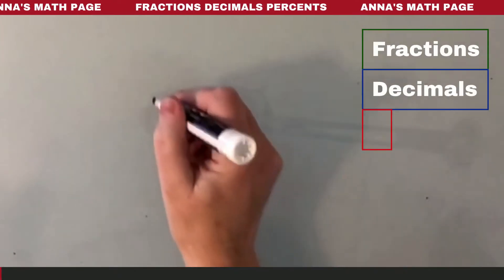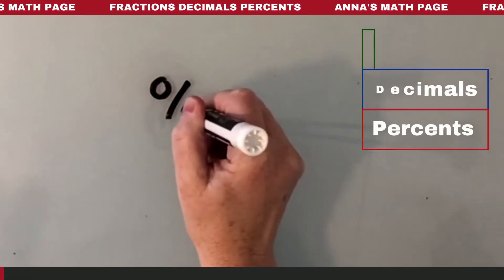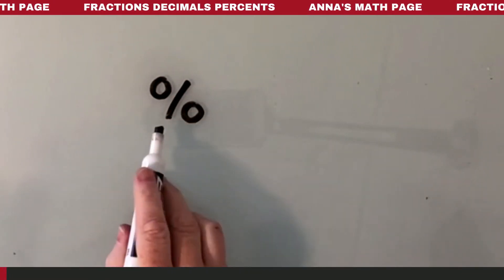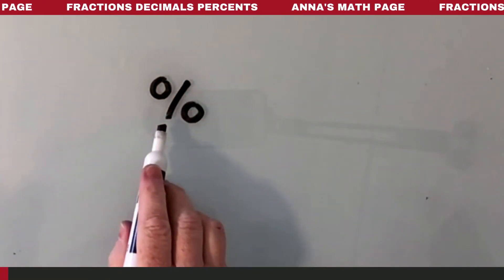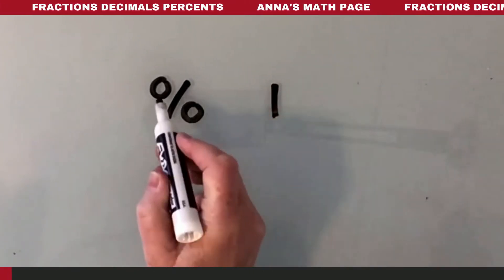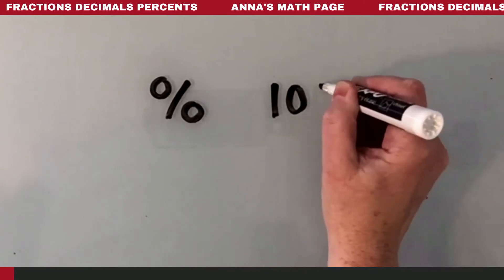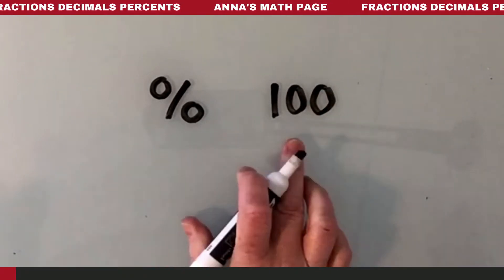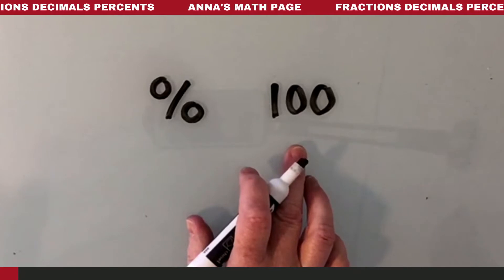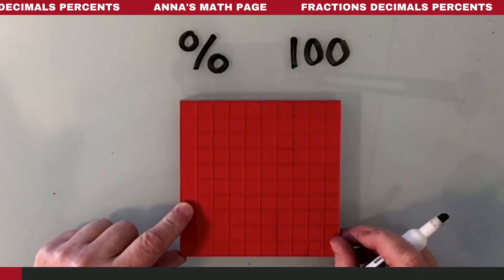Let's talk about percent. Percent means out of 100. You could actually take this and rearrange it — take the little one there, put it here, take the zero, put it there, take that zero, put it there. It's out of 100. That's what percent means: per 100. That's what percent is — out of 100.